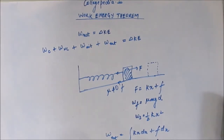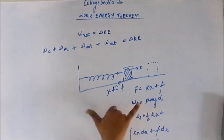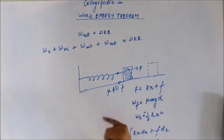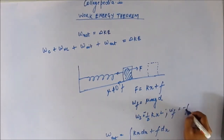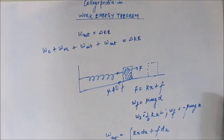For the work done by the spring force, note that the displacement is to the right but the spring force acts to the left, so work done by the spring force is negative: minus half kx squared. Similarly, friction acts to the left while displacement is to the right, so work done by friction is minus mu·mg·x. Thus, the work done by the external force is numerically equal but opposite in sign to the combined work of the spring force and friction.